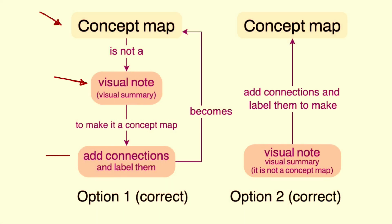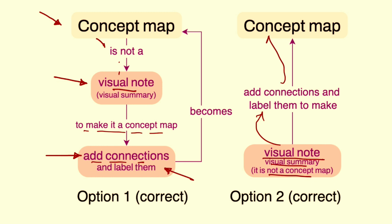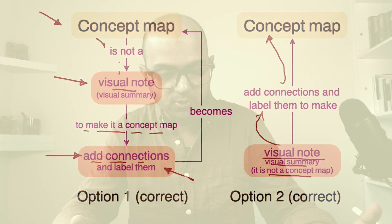Another common issue when drawing a concept map is deciding which content should be a node and what should be a connection. For example, in this small block of concept map, I have used 'visual node' as one of the nodes and 'add connections' as another node — so as we read it: a concept map is not a visual node, and to make it a concept map, add connections. This is a correct concept map. I can also redraw this such that 'add connections' becomes a connection label, so: a visual note is a visual summary; it is not a concept map — add connections and labels to make a concept map. This is also an equally effective concept map. Deciding what is a node and what is a connection totally depends on you.